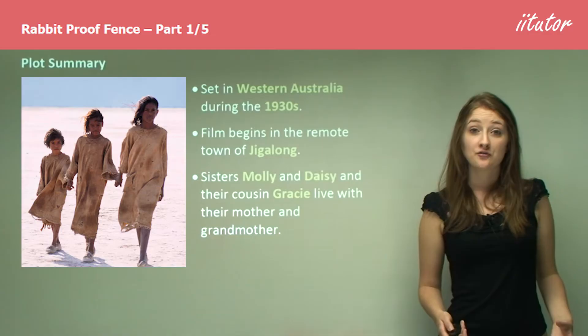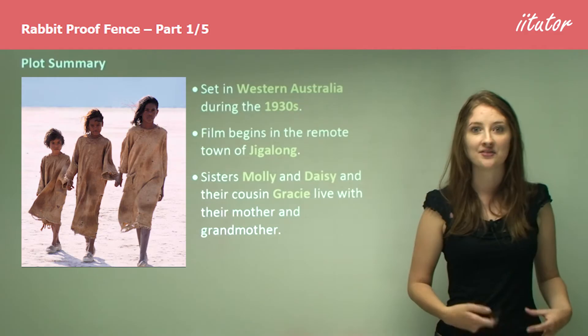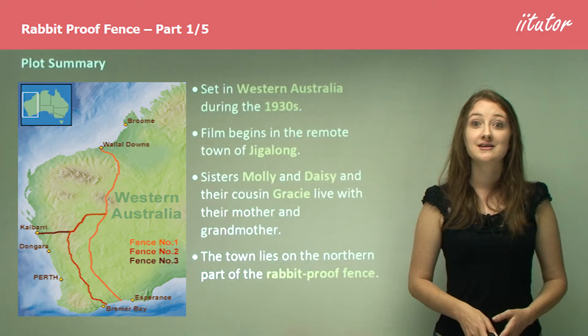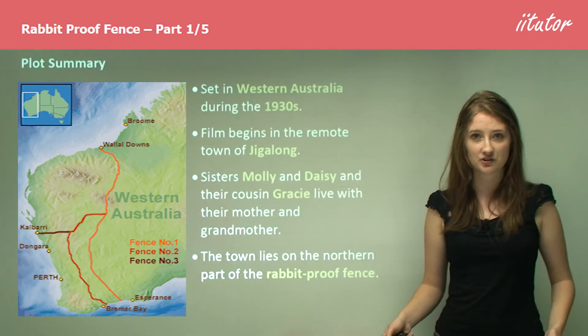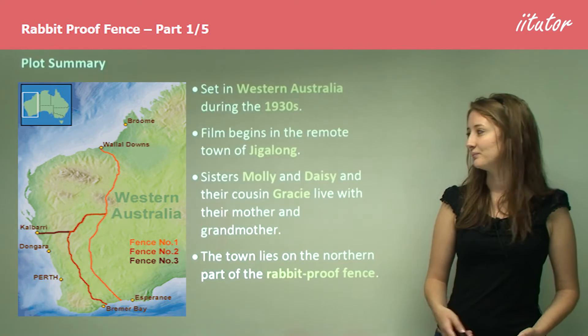What the film involves is sisters Molly and Daisy, and their cousin Gracie, who live with their mother and grandmother in this town, and the way in which once they're taken from that town, they aim to get back to it. The town lies on the northern part of the rabbit proof fence, which is an actual thing in Australia — basically a fence to make sure the rabbits didn't spread across the country. It became a real dividing line down the country, and in this film, it's the means by which the girls track back from their new home to their old home.